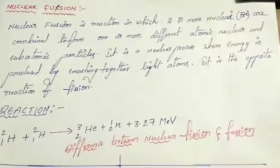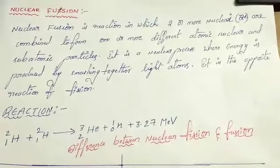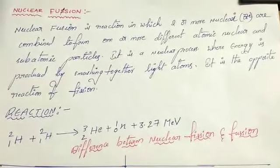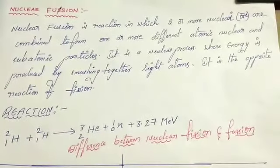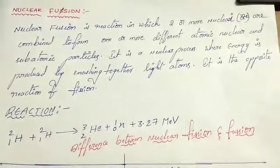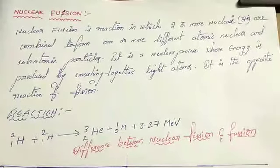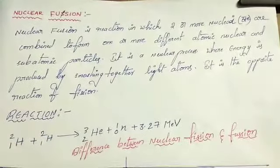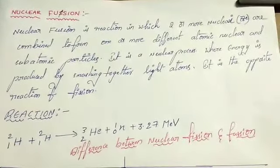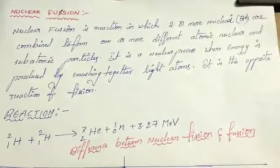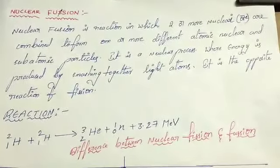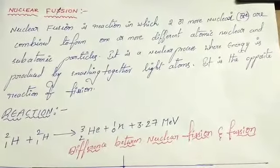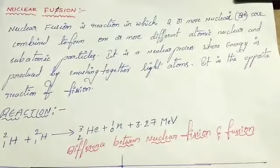Nuclear fusion is quite opposite to nuclear fission. In nuclear fission, one atom can be split into two atoms. But in fusion, two light atoms combine together. That's why fusion is quite opposite to nuclear fission.